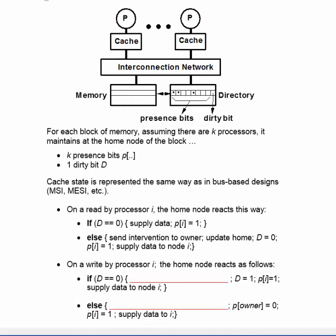Let's consider how the bit vector and the dirty bit are manipulated on memory transactions. First, on a read by processor I, the home node makes the following changes. If the dirty bit in memory is zero, then it simply supplies the data to the requesting cache and sets that cache's presence bit to one, recording that that block is present in the cache of processor I.